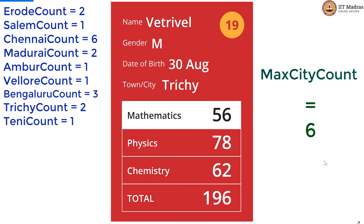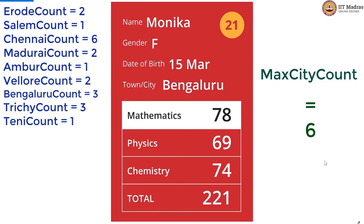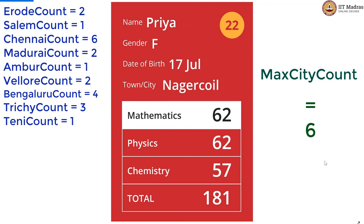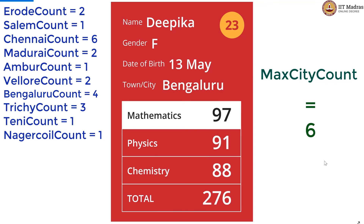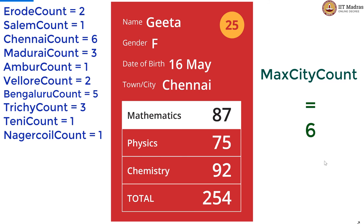E-road count is now 2. Trichy count will now be equal to 3. Velour count is now going to be equal to 2. Bengaluru count is now 4. Nagarkoil is new, so Nagarkoil count is declared, initialized to 0, incremented by 1. And then we have Bengaluru count going to 5, and then Madurai count being incremented to 3. Again Chennai, so Chennai count is now incremented to 7. And that means our max city count also has to be updated — it is now 7.